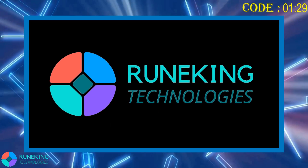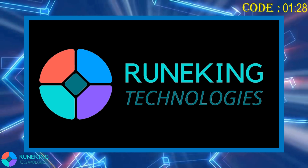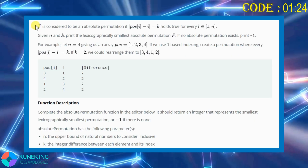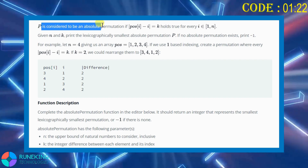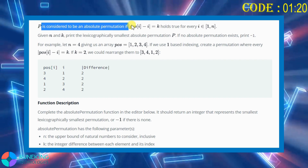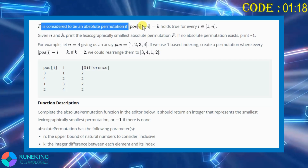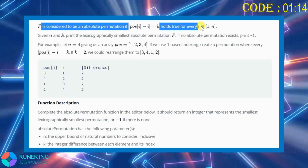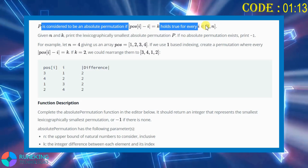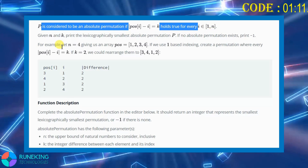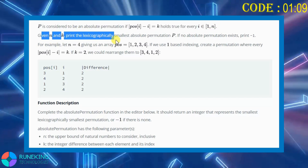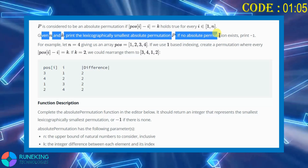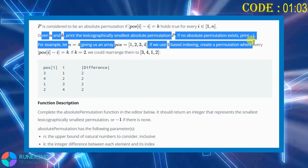Hi, I am the Roan King and in this video we are going to solve the HackerRank Absolute Permutation problem. P is considered to be an absolute permutation if the absolute difference between the position I and value at I is equal to K, for every I which belongs to 1 to N inclusive. Given N and K, print the lexicographically smallest absolute permutation P. If no absolute permutation exists, print -1.